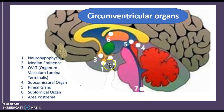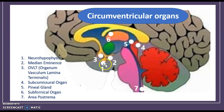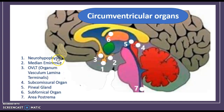One thing to note: the neurohypophysis is also known as the posterior pituitary. The pituitary gland has two lobes — the anterior lobe, known as the anterior pituitary, and the posterior lobe, known as the posterior pituitary. If you hear just the word 'hypophysis' alone, we're talking about the entire pituitary gland; if you hear 'neurohypophysis,' we're talking specifically about the posterior pituitary.